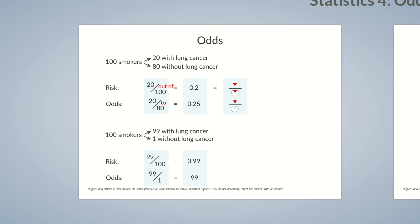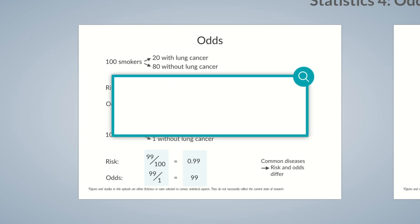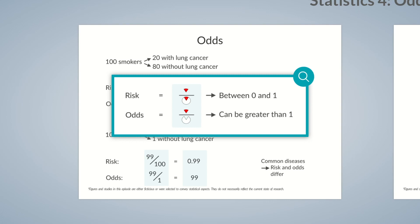Therefore, an important aspect to keep in mind is that for rare diseases, the risk and odds values are quite similar. In contrast, the more common the disease in the group examined, the larger the difference between the odds and risk values. The risk is the number of individuals with the disease divided by the total number of individuals at risk of developing the disease. Since this is a proportion, the risk can't exceed the value 1 — it's always a value between 0 and 1. In contrast, the odds value compares individuals with the disease to individuals without the disease, so it isn't a proportion. If the number of individuals with the disease is higher than those without, the odds value can exceed 1.